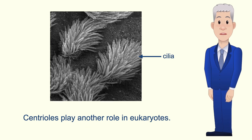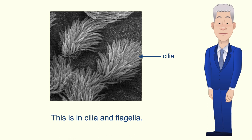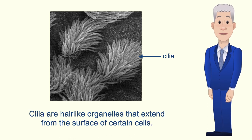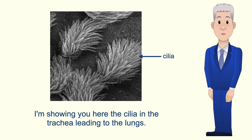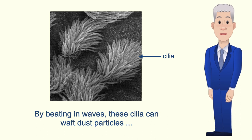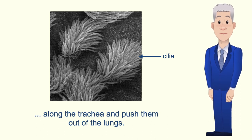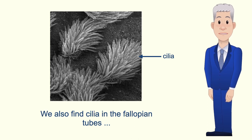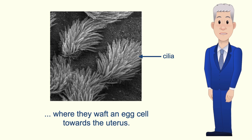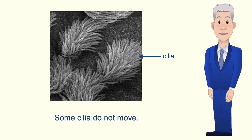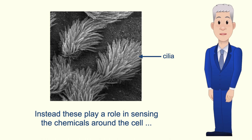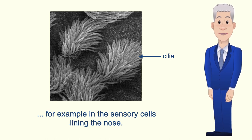Centrioles also play a role in cilia and flagella. Cilia are hair-like organelles that extend from the surface of certain cells. Shown here are the cilia in the trachea leading to the lungs — by beating in waves, these cilia can waft dust particles along the trachea and push them out of the lungs. We also find cilia in the fallopian tubes where they waft an egg cell towards the uterus. Some cilia do not move; instead these play a role in sensing the chemicals around the cell, for example in the sensory cells lining the nose.